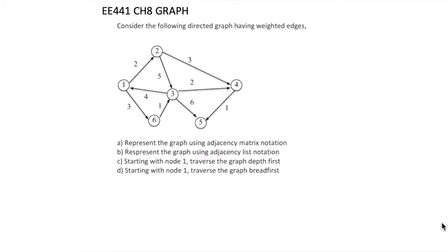Part A: Represent the graph using adjacency matrix notation. Part B: Represent the graph using adjacency list notation. Part C: Starting with node 1, traverse the graph using depth-first traversal algorithm.